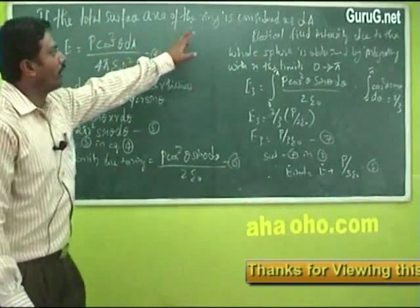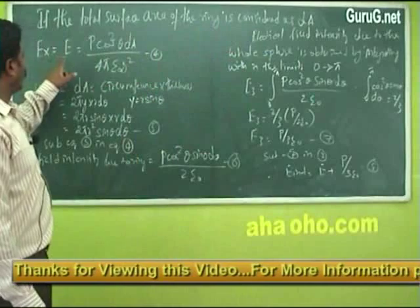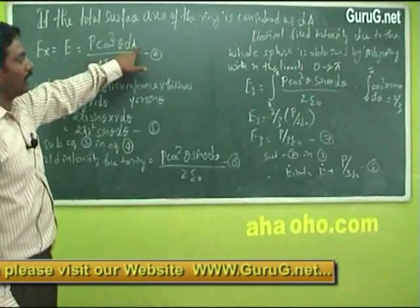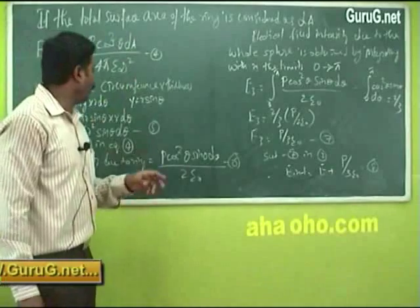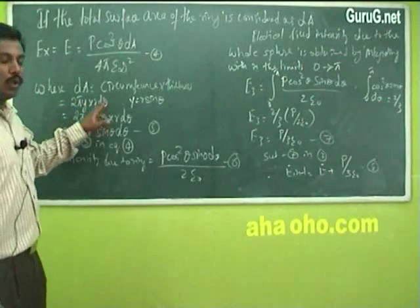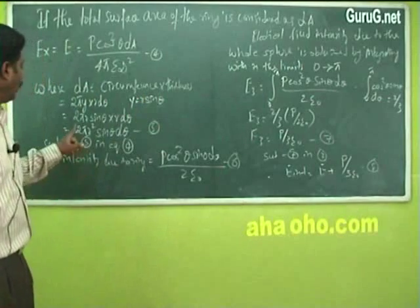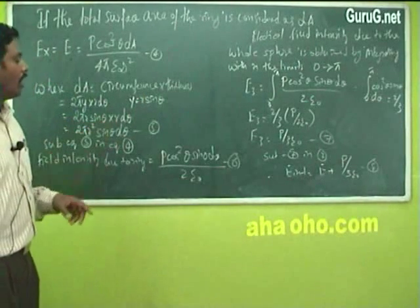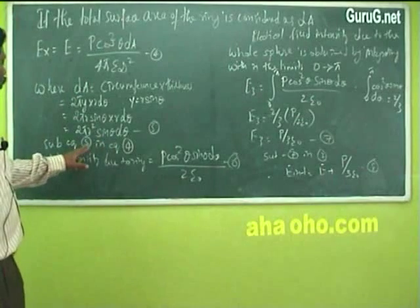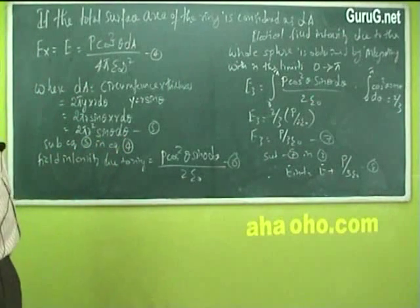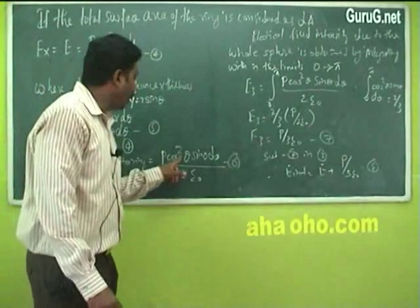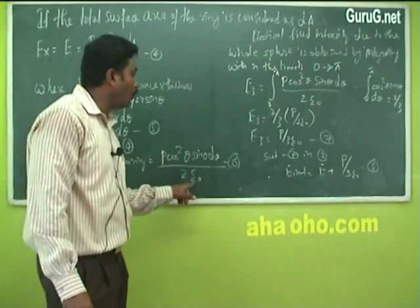Since y = r·sinθ, the surface area element dA = 2πr²·sinθ·dθ. Substituting this into the expression for Ex, the internal field intensity for a small element is given by p·cos²θ·sinθ·dθ / (2ε₀). This is equation 5 substituted into equation 4.